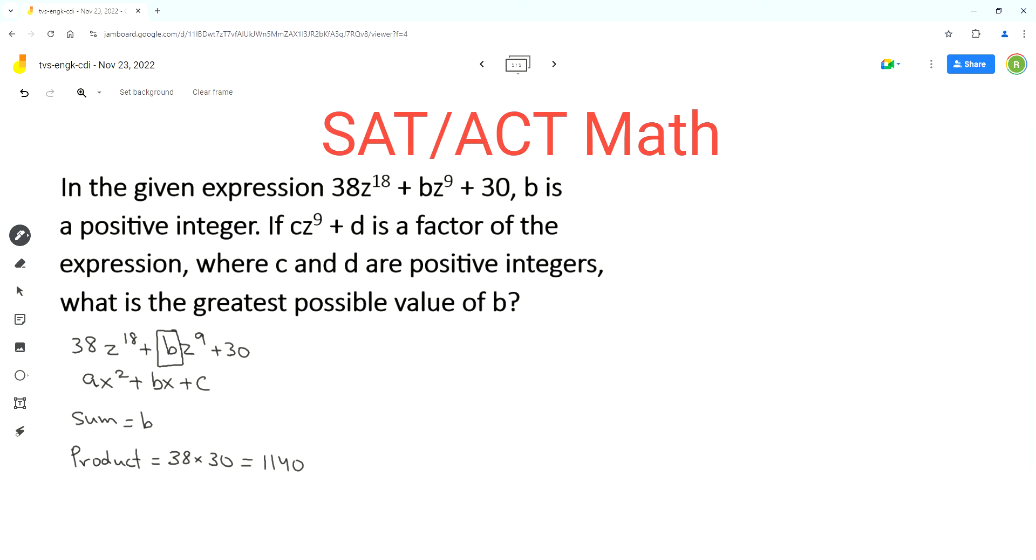So we have to find the greatest possible value of b from two numbers that multiply to 1140. So we have to find factors of 1140.